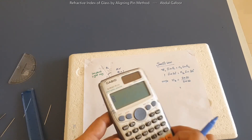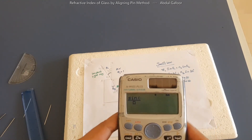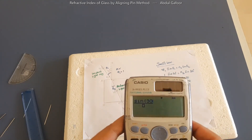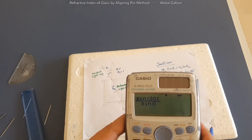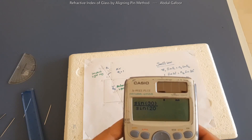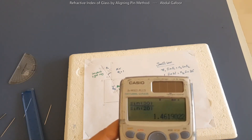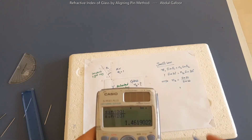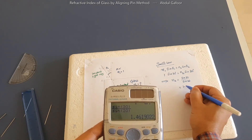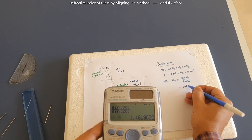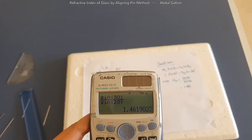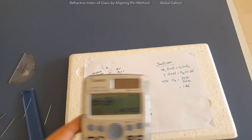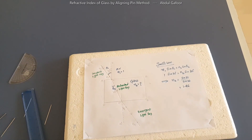Using a calculator: sin(30°) / sin(20°) gives the answer 1.46. The refractive index has no units — it's just a number. So the refractive index of the given glass slab is 1.46. I hope you understood how to perform and calculate the refractive index of the given glass slab.